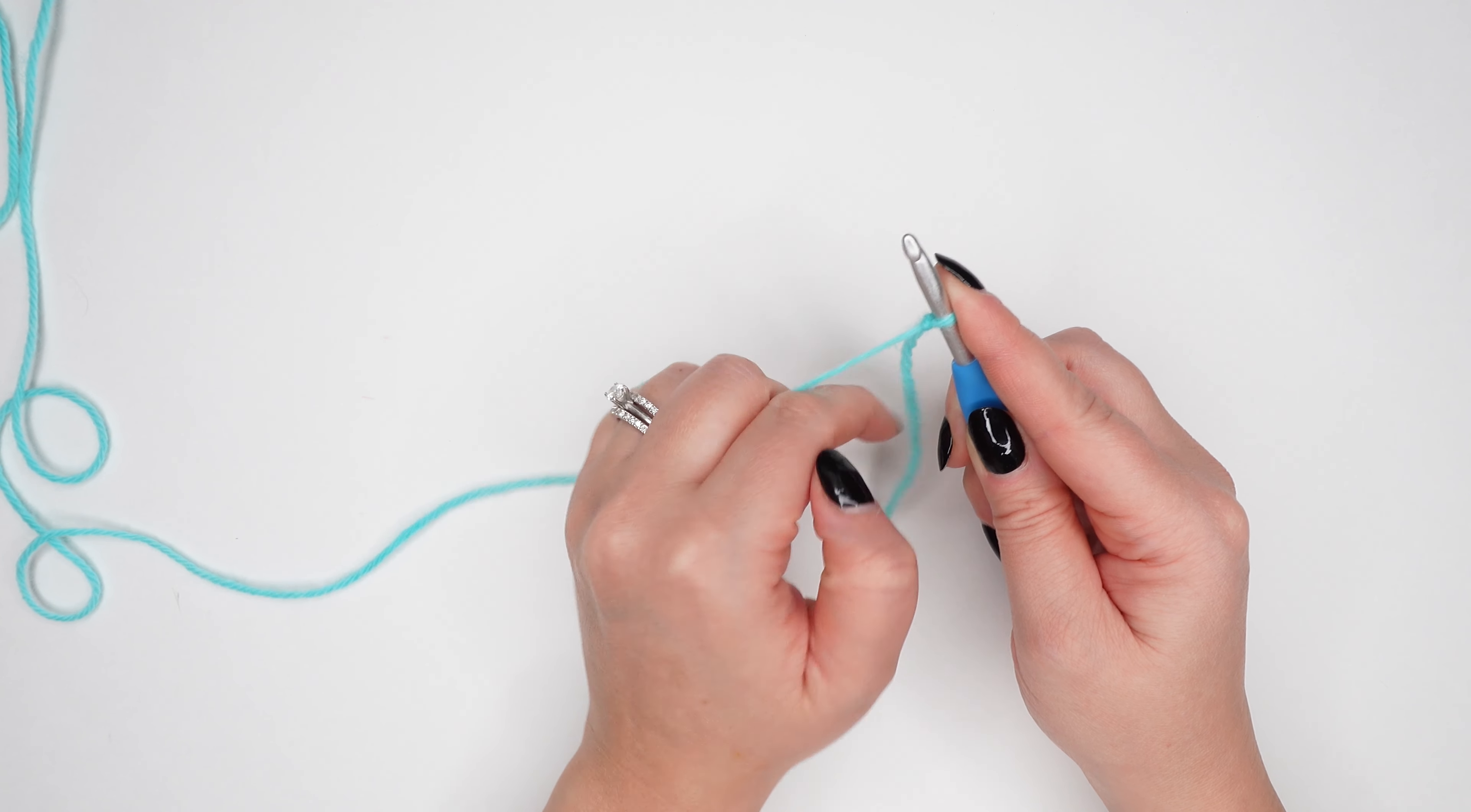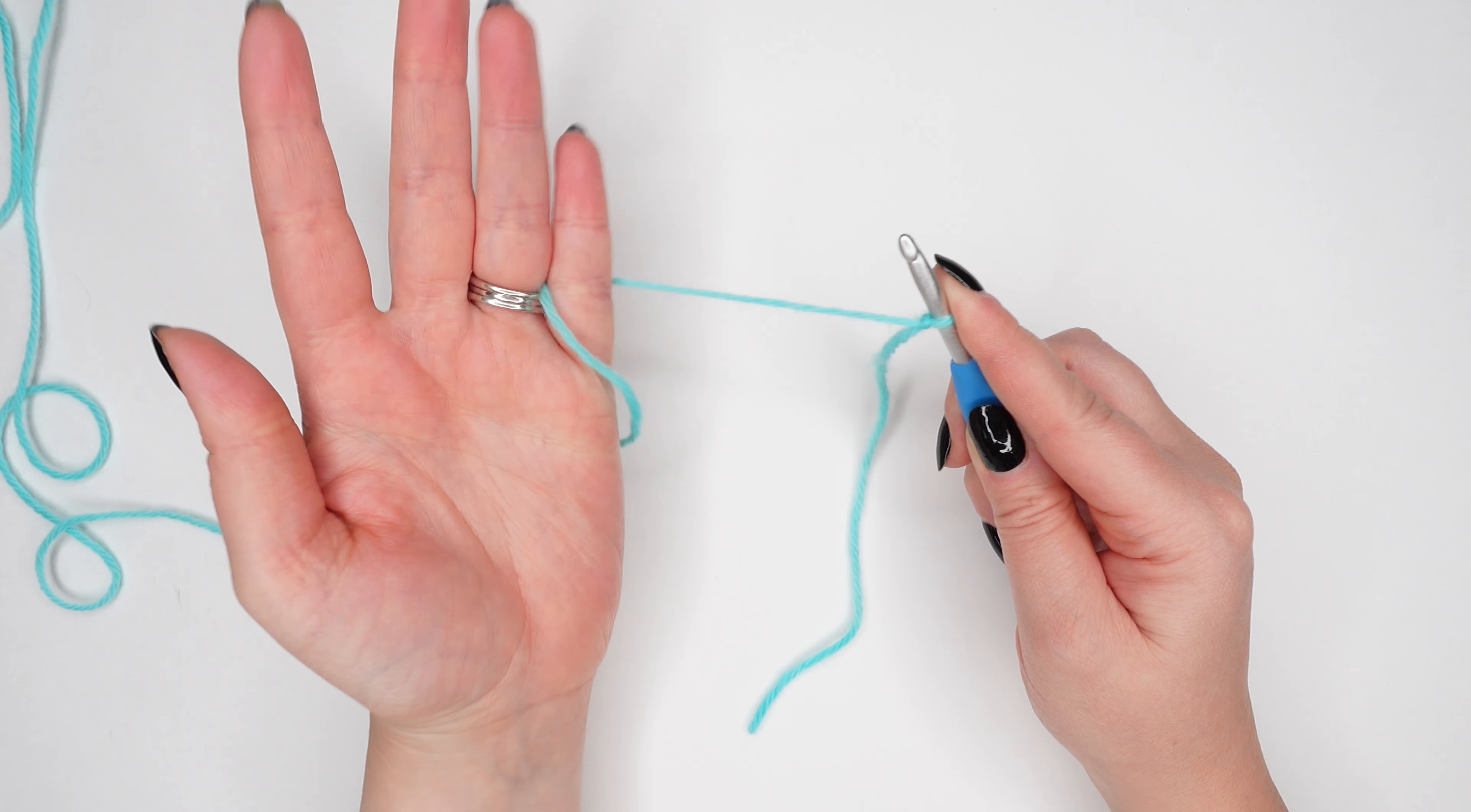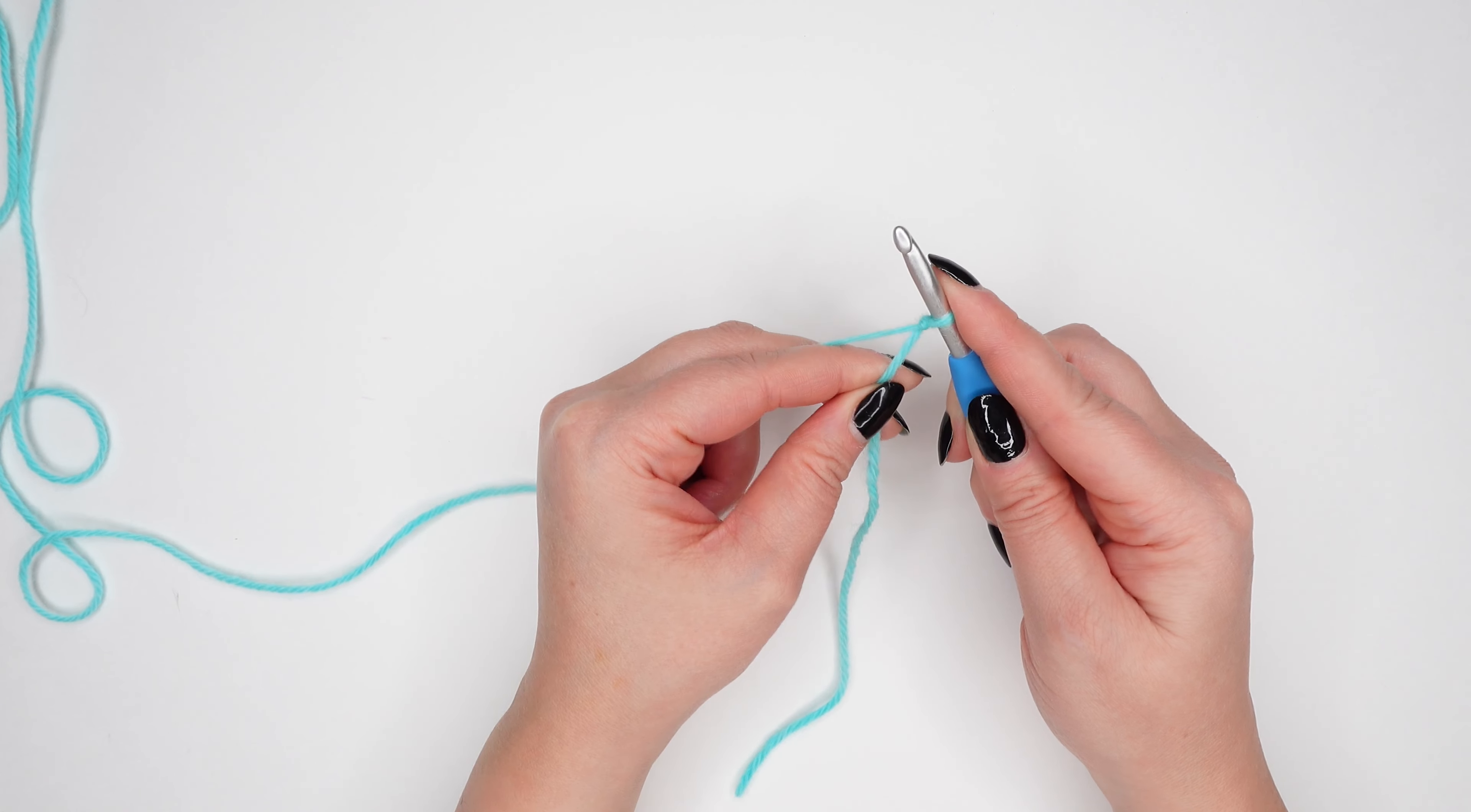Okay, so once you get a feel for how to hold your hook and yarn, we can move into making our first foundation chain. Get your hands into crochet position and secure your pointer finger over the slip knot.